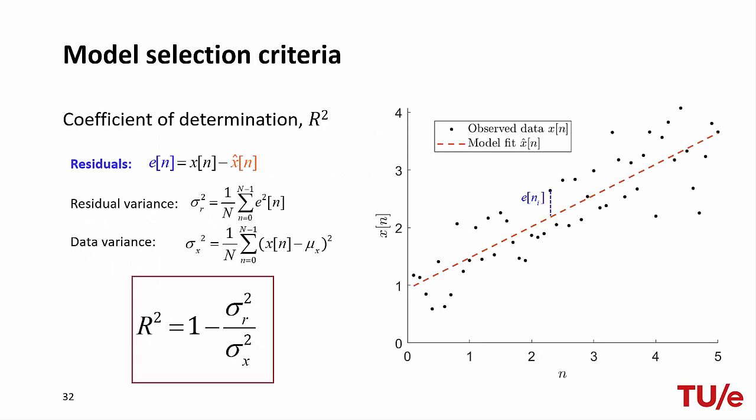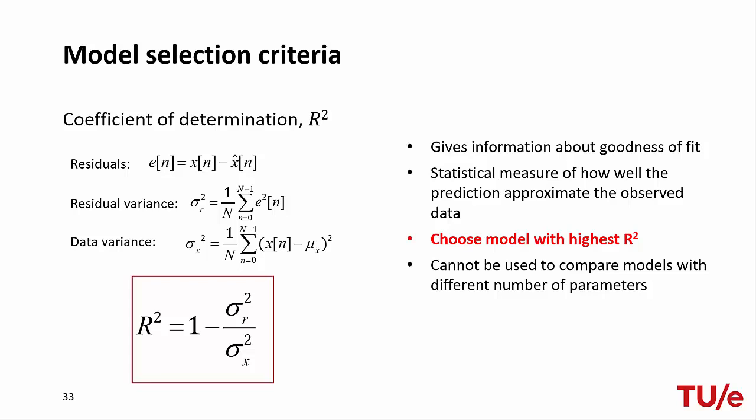One such criterion is R-squared. Suppose we fit observed data with a chosen model; at each instance, the discrepancy between the model and the observations — the residuals — is measured. R-squared is calculated as 1 minus the ratio between the variance of the residuals and the variance of the data. A model with R-squared close to 1 is very good at explaining variance in the data, so we choose the model with the highest R-squared. However, since the residual variance always decreases as model order increases, R-squared is not suited for comparing models with different numbers of parameters.